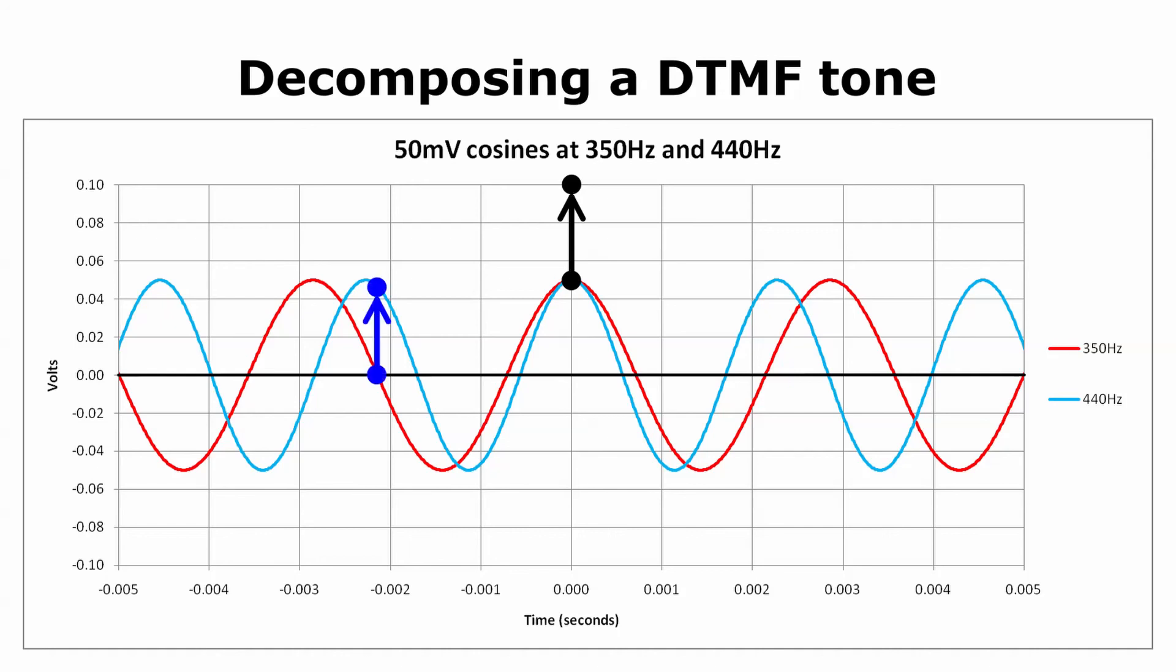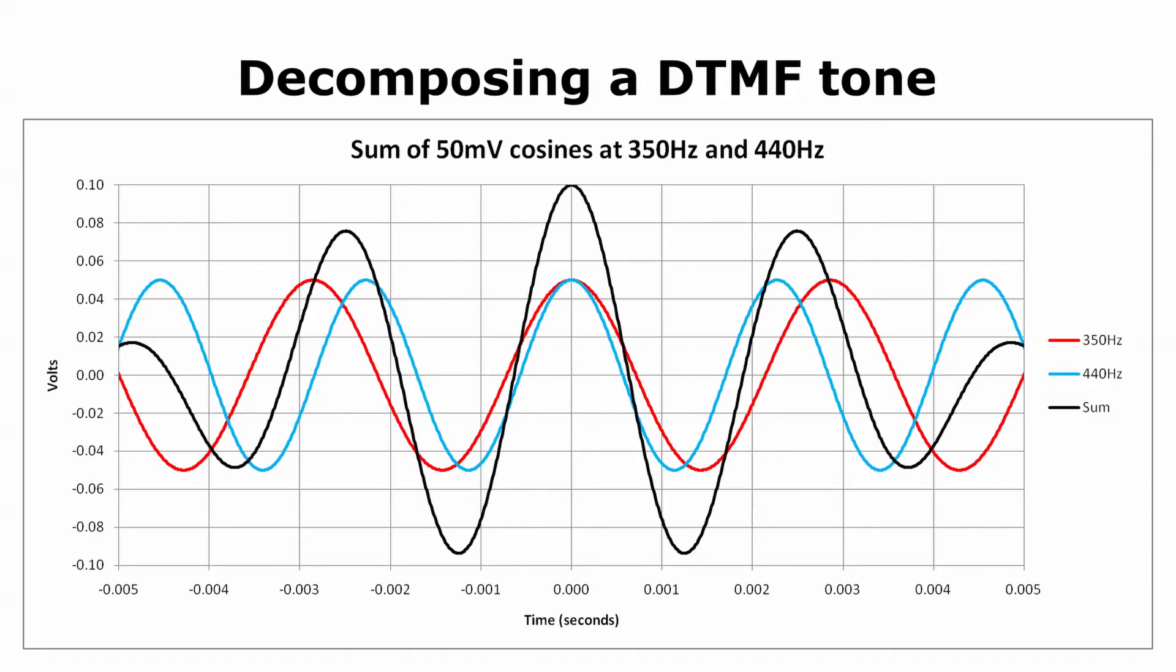At certain times, when the red curve has the value 0, the sum will be equal to the value of the blue curve. The blue dots show an example of a time when this is the case. At other times, when the blue curve has the value 0, the sum will be equal to the value of the red curve. The red dots show an example of a time when this is the case. After adding up the values for all of the times across the horizontal axis, the result is this black curve.